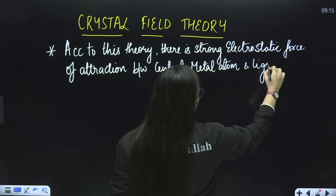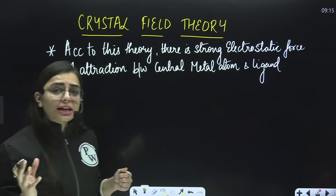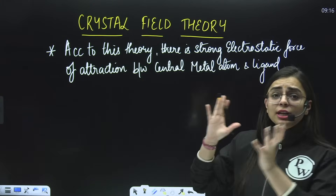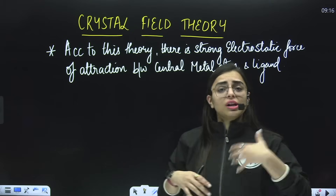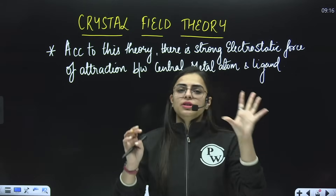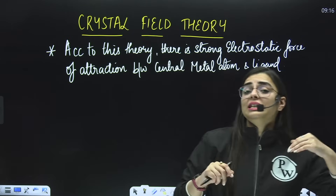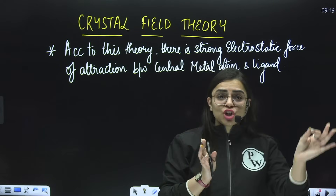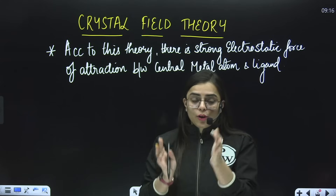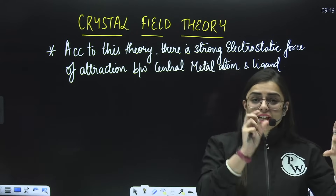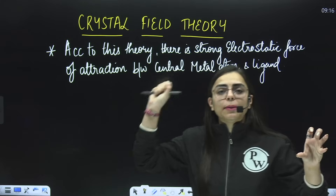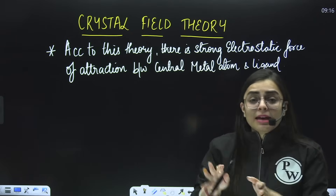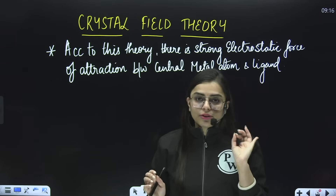As I mentioned, there is electrostatic force of attraction, meaning we are talking about positive and negative charges. The central metal atom acts as a positively charged species, while the ligand behaves as a negatively charged species. Ligands basically act as a point charge or a point dipole. When considering a neutral central metal atom, we take the ligand as a point dipole; when the central atom is an ion, we consider the ligand as a point charge.